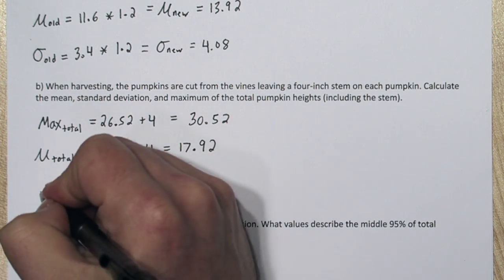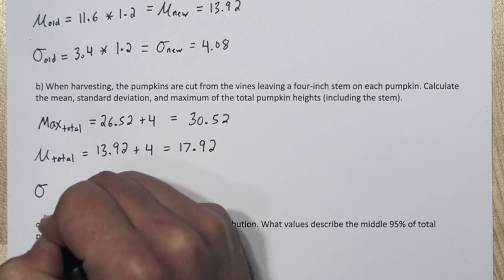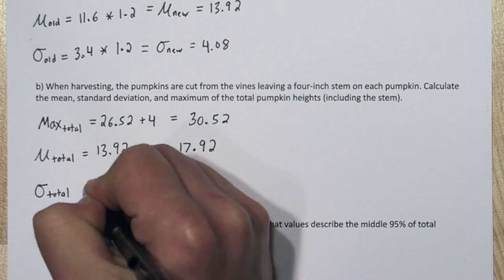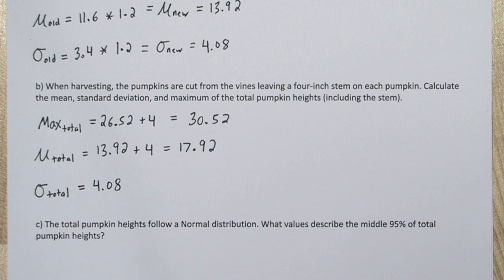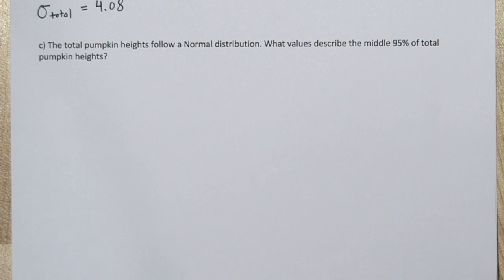The only thing that doesn't change with an addition transformation is measures of spread. Even though all the pumpkins increased by 4 inches, they're not spread out any further apart. They still have the same spread. So our standard deviation is going to remain at 4.08 inches.